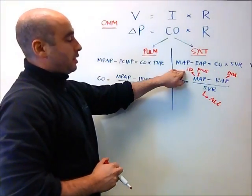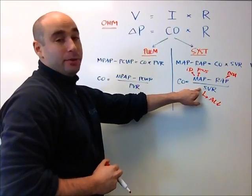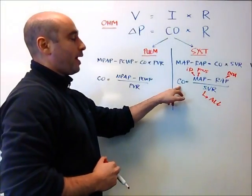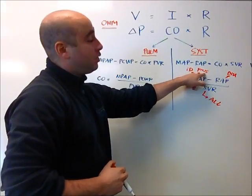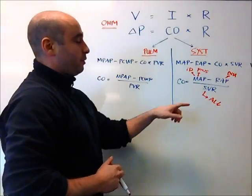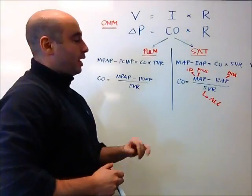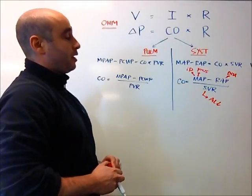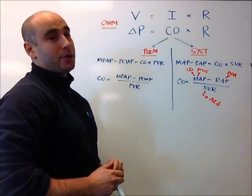Both of these will augment the inotropic function. The difference is that the inodilators, as it says in their name, will also dilate, i.e. reducing the systemic vascular resistance. And we can see that further optimizes our cardiac output. On the other hand, the more traditional pressors will augment the inotropy, but they will also increase the SVR. And this is counterproductive in terms of optimizing the cardiac output. And for this reason, we typically choose inodilators over pressors for inotropic support.